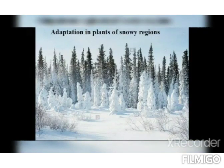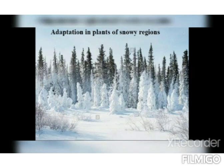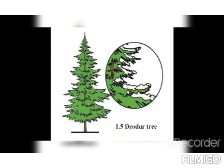Next is adaptation in plants of snowy regions. In what way are sloping branches useful to plants in a snowy region? When snow falls on the branches, it naturally falls off and does not remain on top of the tree. Therefore, as an adaptation, plants in snowy regions have sloping branches. These plants are mainly coniferous, like deodar and pine, which are conical in shape due to their sloping branches. Their conical shape prevents snow from accumulating on the tree, and the thick bark — the outermost layer of the stem — helps the tree withstand the cold.